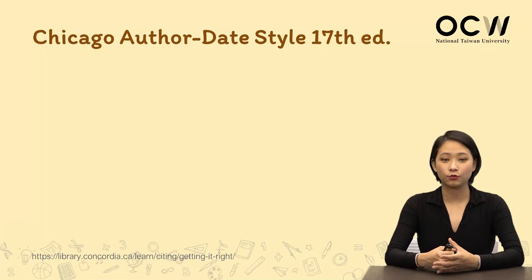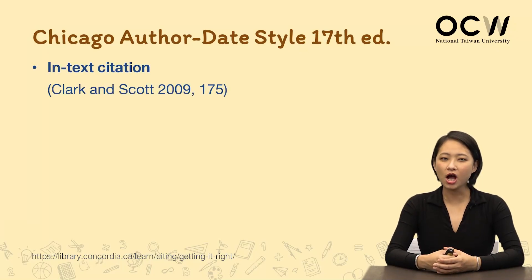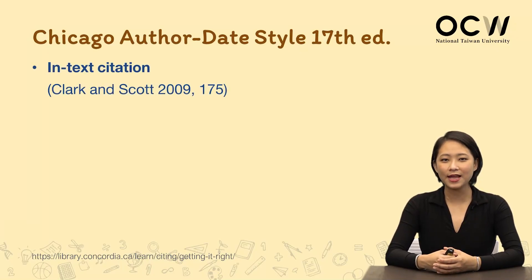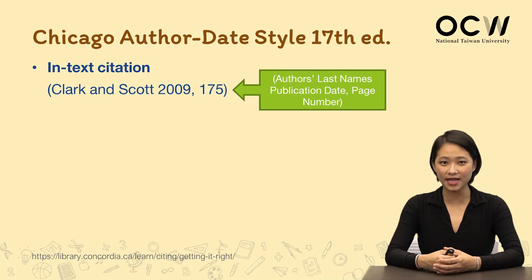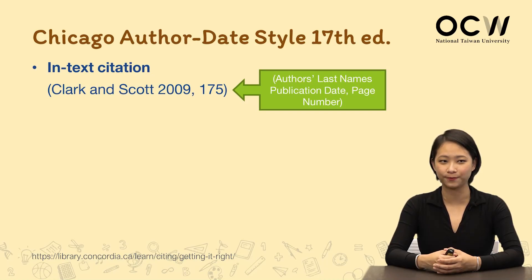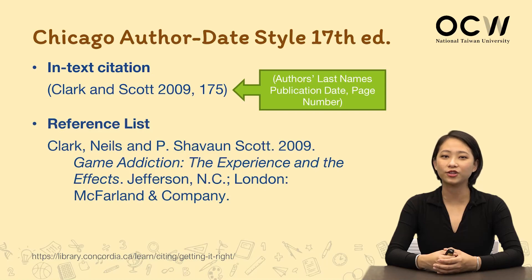Next, we move on to Chicago. Chicago is a bit more tricky — it looks like it has combined the merits of MLA and APA. Along with the author's last name, it also includes the page number as well as the publishing year, while its reference list will look a little more complicated than the others.